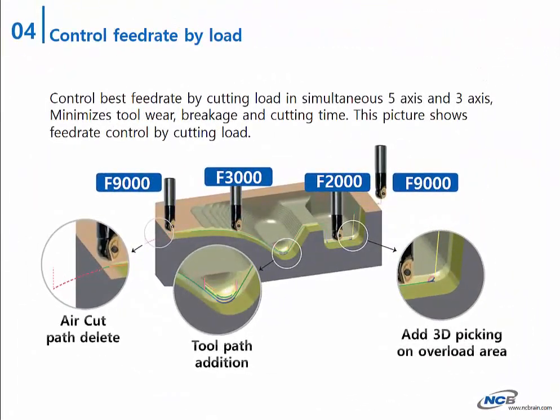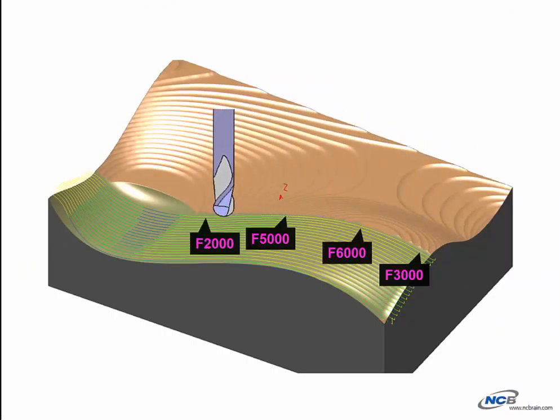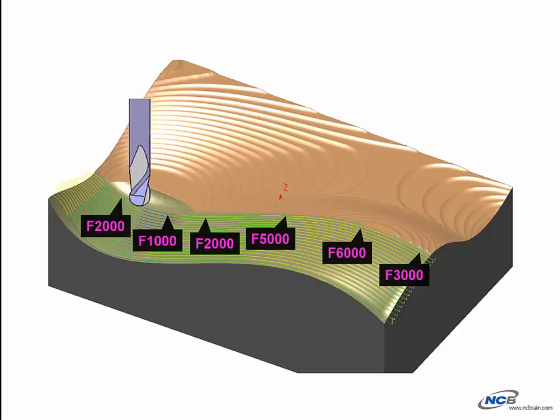Now let me introduce five core functions of NCBrain. First, feed rate control for safety reasons on long distance areas will cause excessive machining time. The proper feed rate control fit for load will make faster machining, and production cost caused by tool abrasion and breakage will be reduced. The milling time will go down even after feed rate control only.